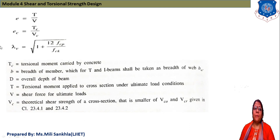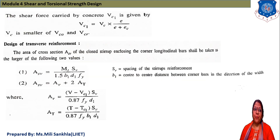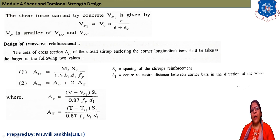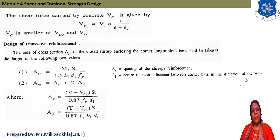Theoretical shear strength depends on the grade of concrete. Shear force carried by concrete: VC1 = VC × (E + EC), where VC is the smaller of VCO and VCR. For design of transverse reinforcement, first find the area of stirrups: ASV = MT × SV / (1.5 B1 D1 FY). SV is the spacing of stirrups and B1 is the centre-to-centre distance between corner bars in the direction of width.